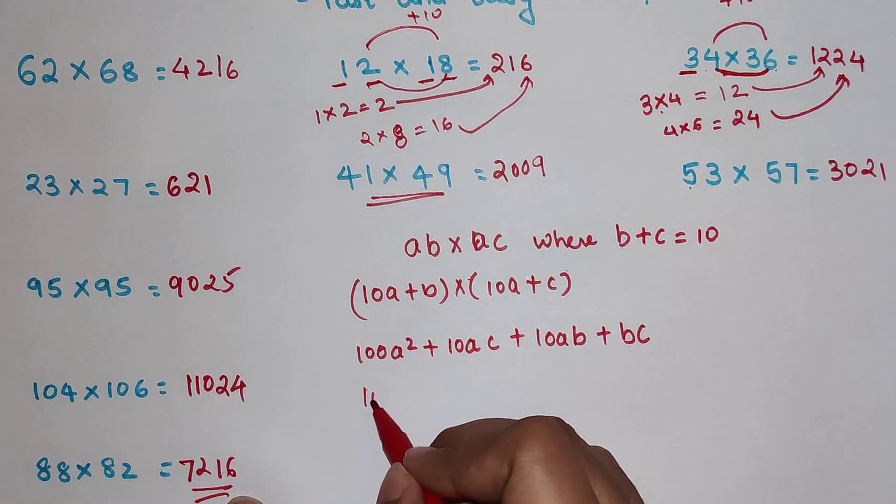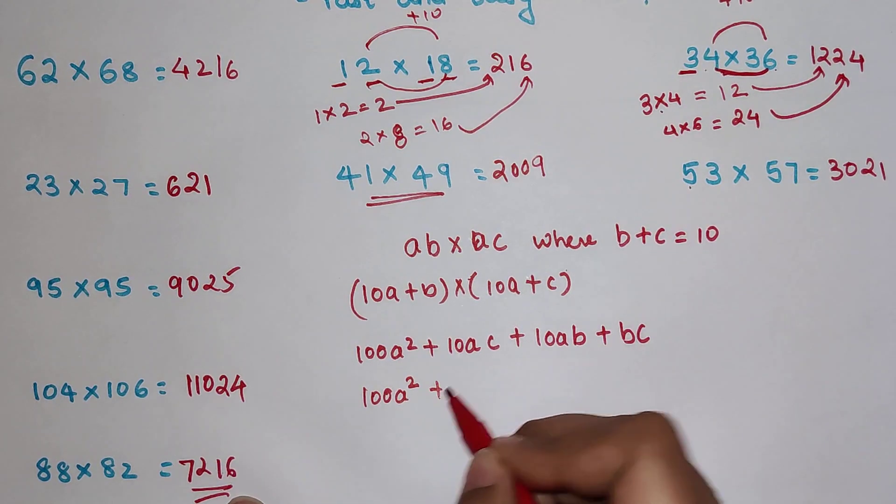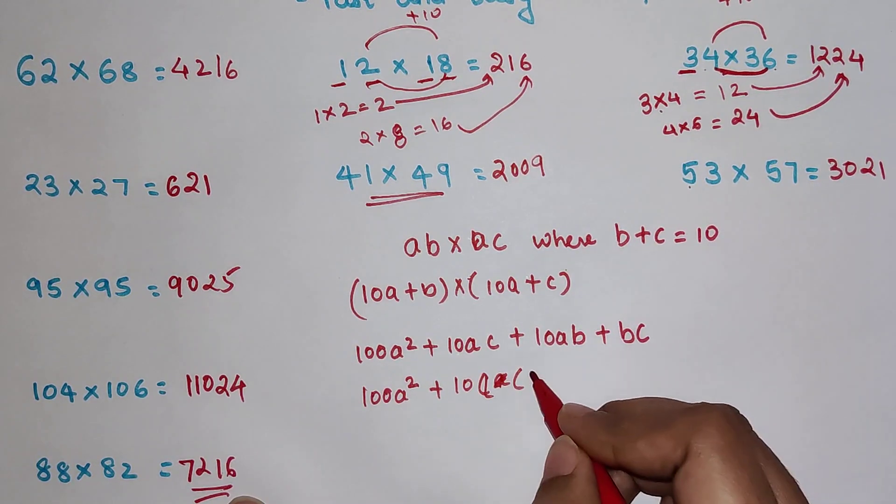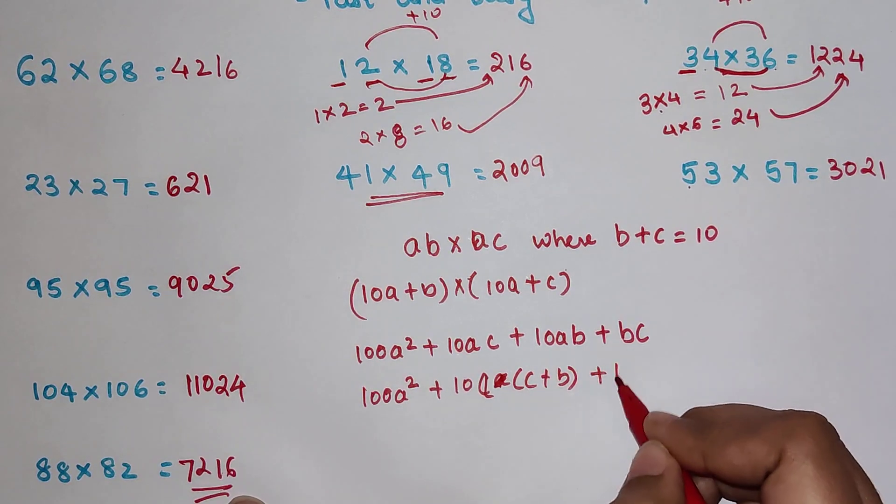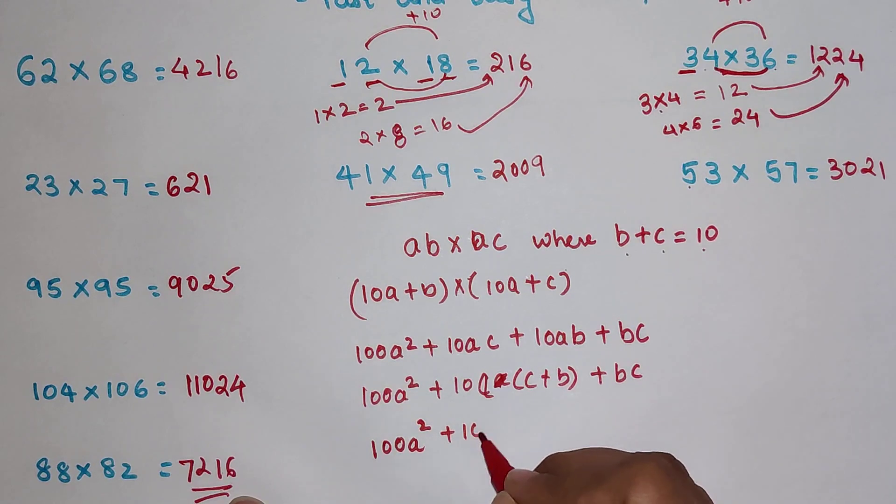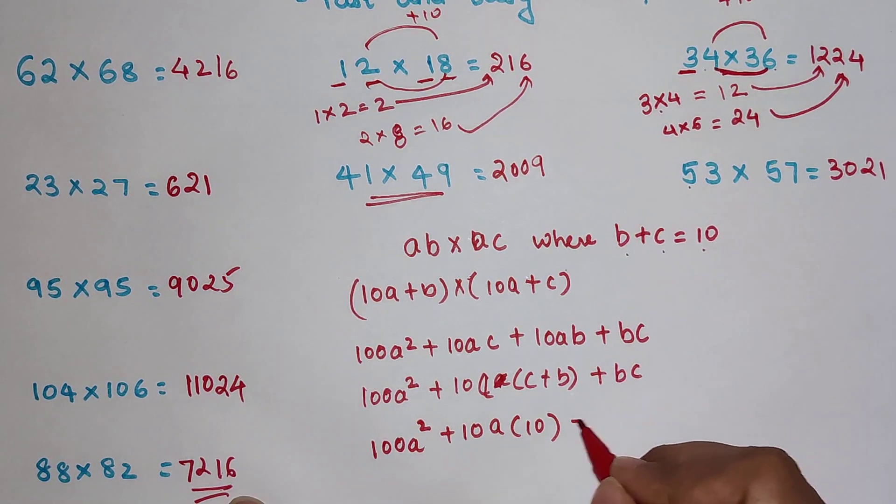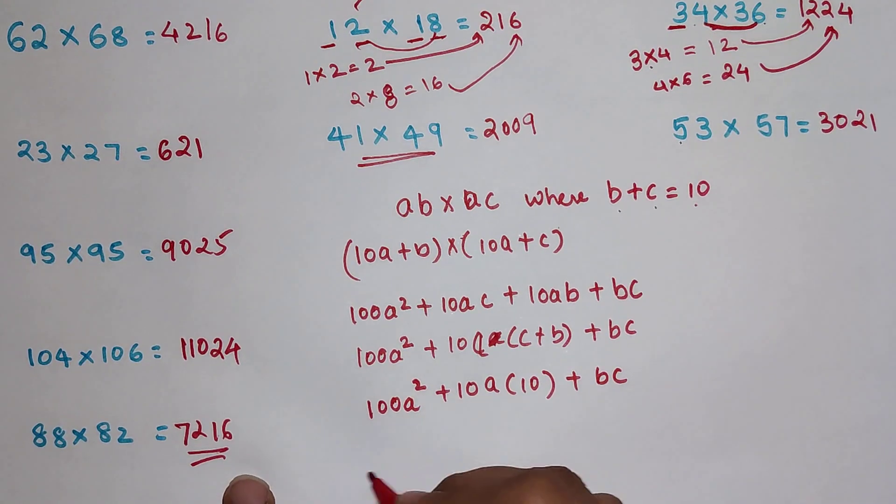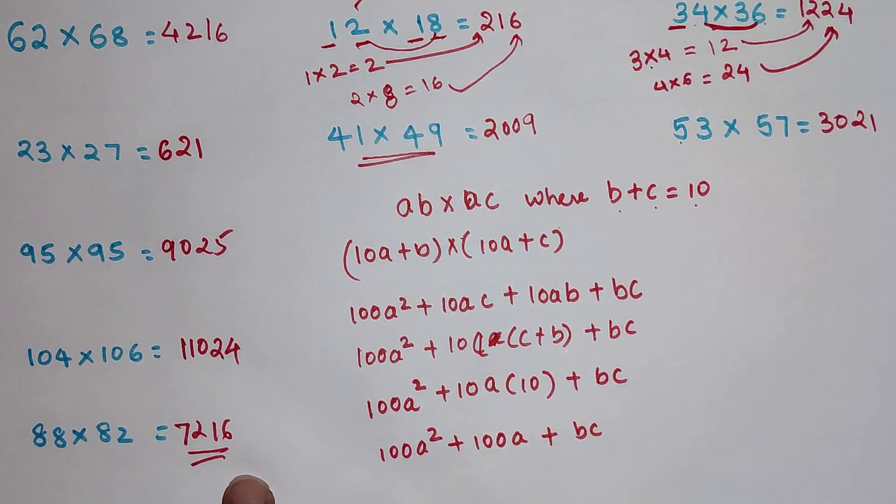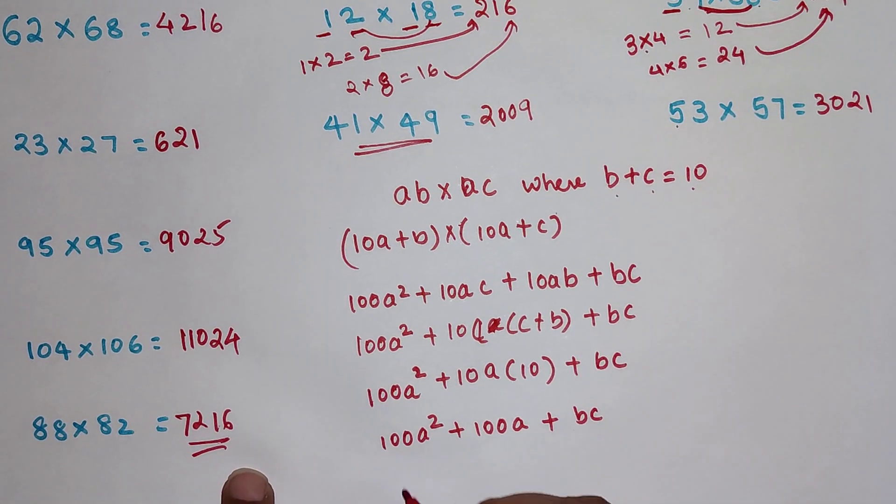So now here we have 100A square plus, let's take 10 common. So we have A. We can take even A common. So we have C plus B plus BC. Now we know that B plus C is what? 10. So we can write this as 100A square plus 10A into 10 plus BC. So we have 100A square plus 100A plus BC. Now what can be taken common from here is 100A. So we will have A plus 1 plus BC.